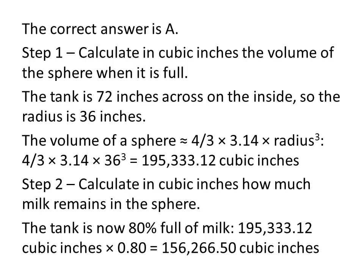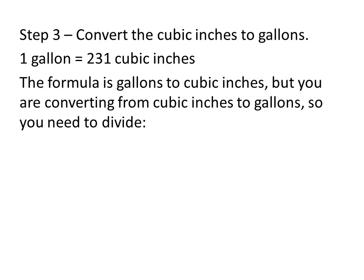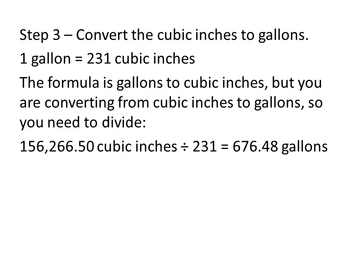However, remember that the question is asking us to convert the cubic inches to gallons. So finally, we need to convert these cubic inches to gallons. Now again, the formula is converting gallons to inches, but we're converting inches to gallons, so we need to divide rather than multiply. 156,266.5 cubic inches divided by 231 cubic inches per gallon gives us our final answer of 676.48 gallons.